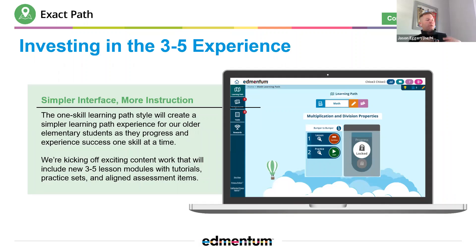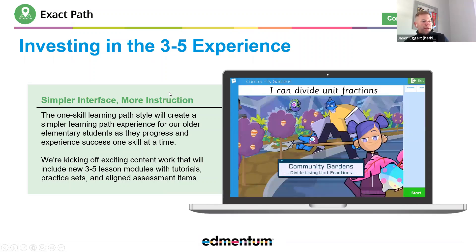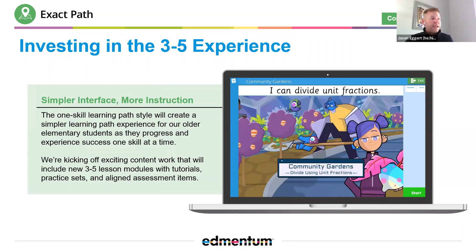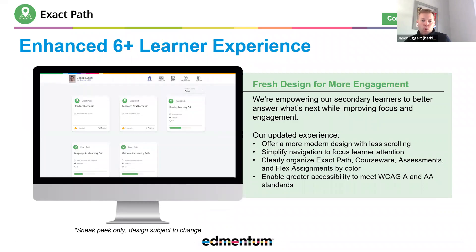On the 3 through 5 side, we're creating that simpler learning path experience for our older elementary students. We want to make sure that the tutorials, practice sets, and assessment items are all quickly visible. We are creating more new content using our Nebula characters — those animated characters you may have seen from our Education City program. We also get some of that in 3 through 5. For grades 6 through 12, we're continuing to create more content that has that graphic novel feel to it.